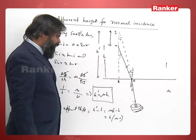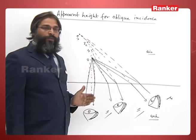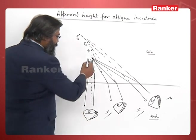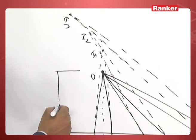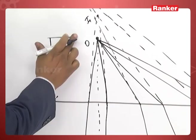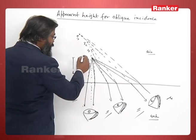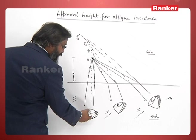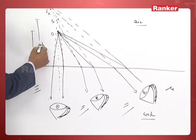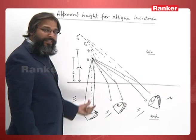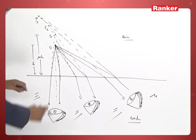You see, this is the case of apparent height for oblique incidence. This is my object at a height of h from this surface. Suppose this is water here and this is air. So the first image, if we see from normally, it will be formed at μ times h. This is for normal incidence. If we are seeing normally, the object O will appear to be I₁ at μh.